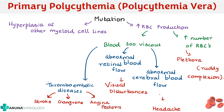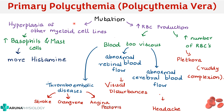Not only RBC production is increased, but also other myeloid cell lines. There will be an increase in basophils and mast cells, which are the main source of histamine. When there is more histamine, the patient will have increased itching, or pruritus. So the clinical features are: plethora or ruddy complexion; symptoms of headache, visual disturbance; and it can present as angina pectoris, gangrene, or stroke; plus pruritus.